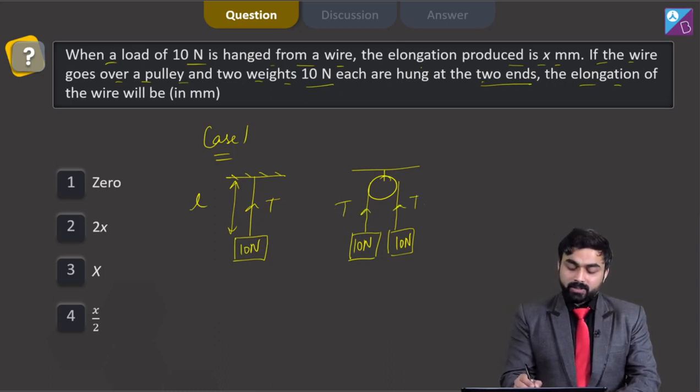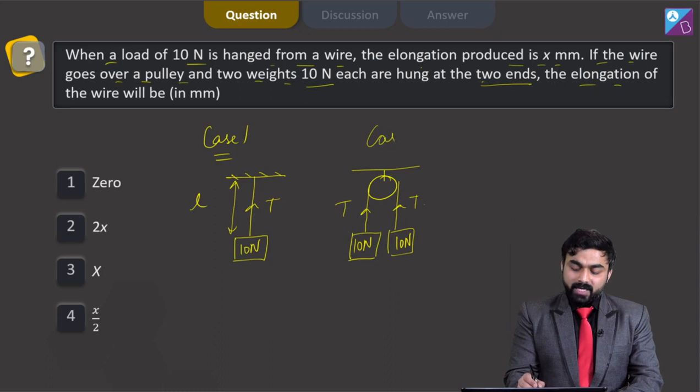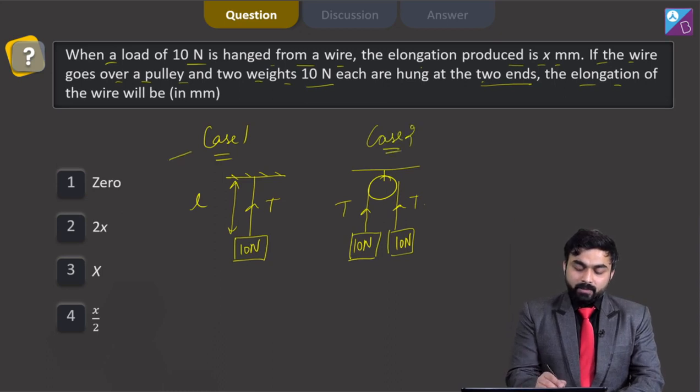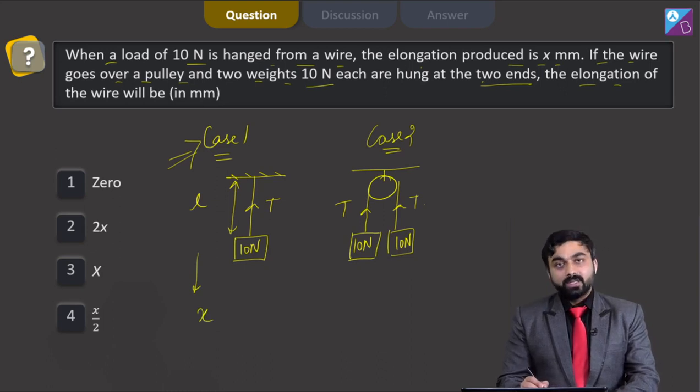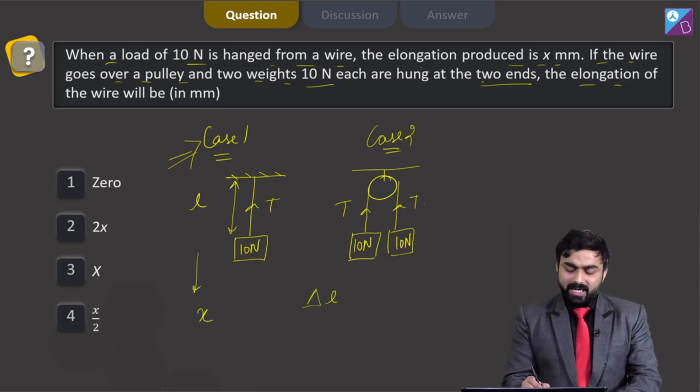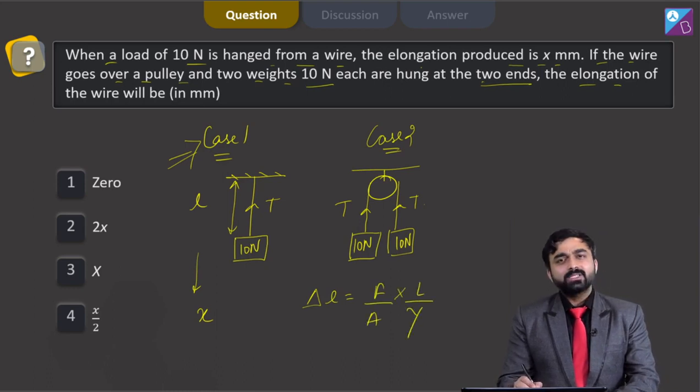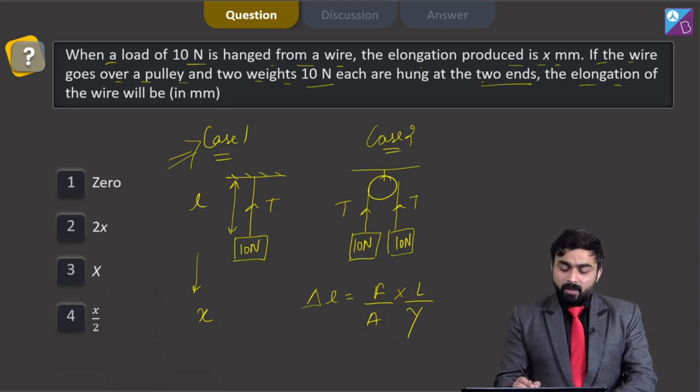In case number one, students, the elongation is x. And if we talk about the elongation, then delta L is equal to F by A into L over Young modulus. This is the relation.